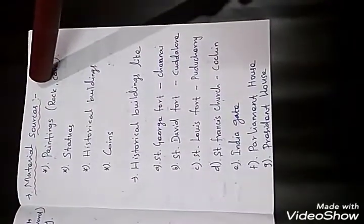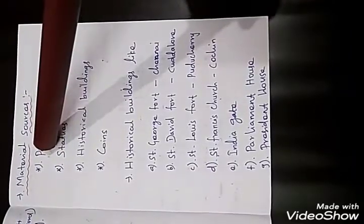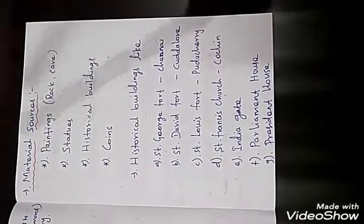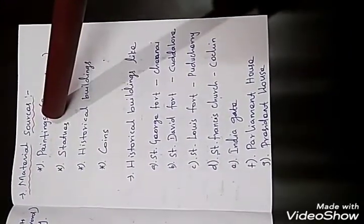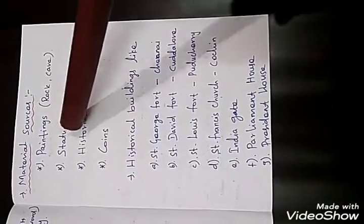The second main category is material sources. Material sources are evidence like paintings, statues, historical buildings, and coins. These four types are the material sources.